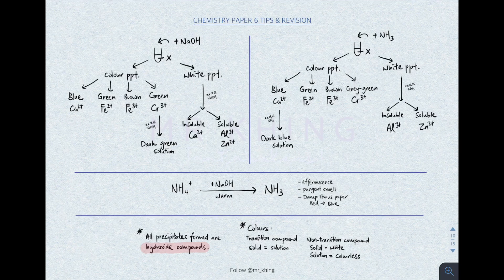In the exam, they may ask about the color appearance of the solution or solid. For transition metal compounds, the color of the solid is the same as the color of the solution — for example, copper(II) is blue in both solid and solution form; iron(II) is green in both. For non-transition metal compounds, in solid they are white, but in solution they are colorless.